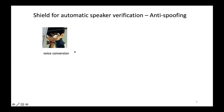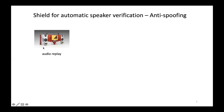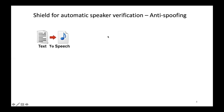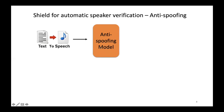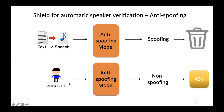Let's get into the background. Automatic speaker verification systems are subject to spoofing audios. These spoofing audios are generated by voice conversion, audio replay, or text-to-speech. So the anti-spoofing model is proposed as the shield for ASV systems. The anti-spoofing model will help detect the spoofing audios, label them spoofing, and throw them away. However, if the input is a piece of user's audio, the anti-spoofing model will label it non-spoofing and let it pass.